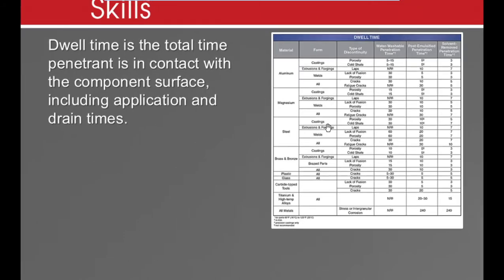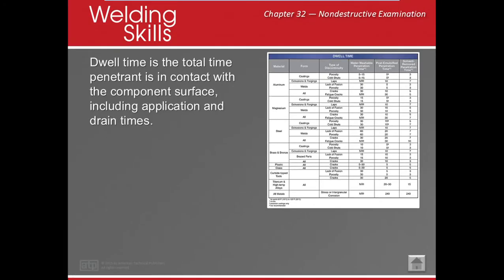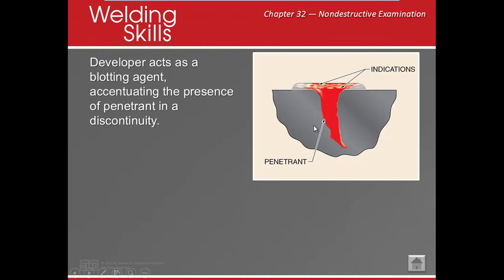Dye penetrant can be used on many materials including glass and plastic, and penetrants come in different sizes for smaller or larger areas. For steel welds, we're looking for lack of fusion, porosity, cracks, and fatigue cracks. There are three types of dye penetrant: water washable, post emulsifiable, and solvent removable. Water washable is the most common since we can simply rinse it off. Dwell times are approximately 30 minutes, 20 minutes, and 7 minutes respectively.